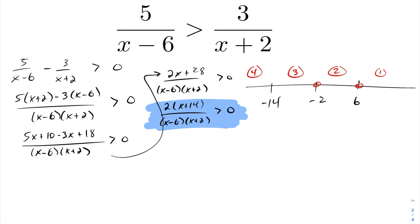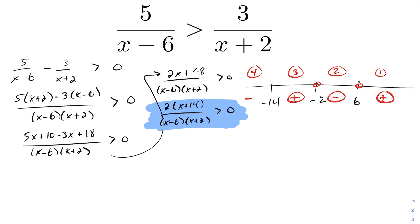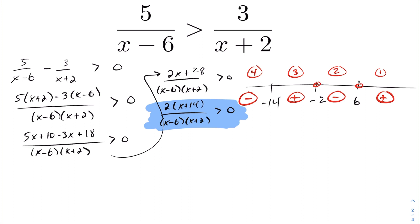Any value greater than six makes the numerator and both denominator factors positive, so the expression is positive — greater than zero — in that interval. Between negative two and six the expression is negative. Between negative fourteen and negative two it is positive. And below negative fourteen it is negative. The signs oscillate: positive, negative, positive, negative.